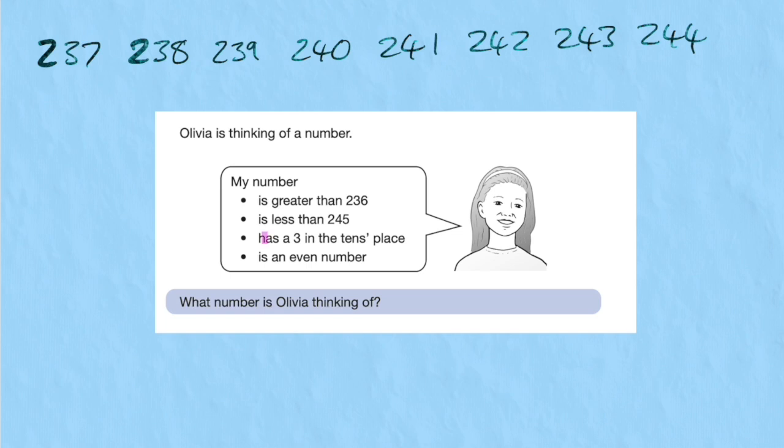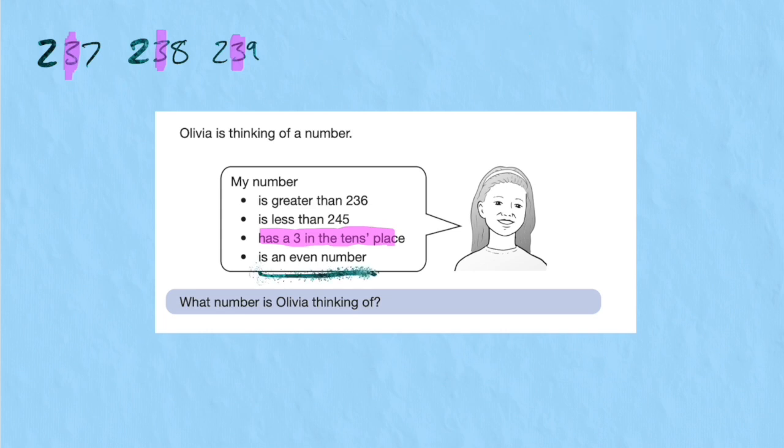Now it says it has a three in the tens place, so let's look at all the tens places and select the ones that have a three. So I have a three here in this tens place, in this one, and in this one, but none of the others, so we can get rid of those. And finally, the last point says, is an even number, so which one of these is an even number? Well, I only have one, and it'd be 238.